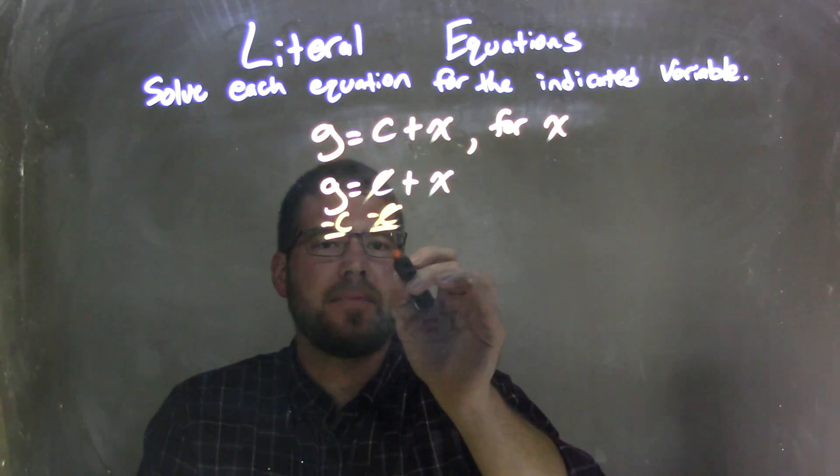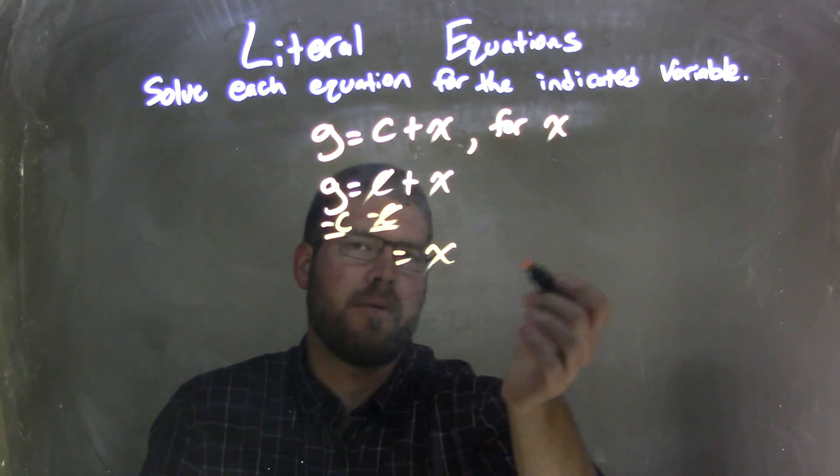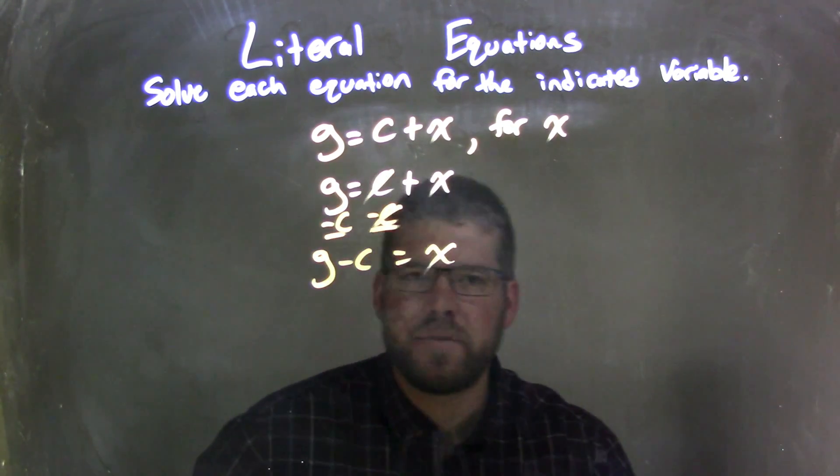That will eliminate the c here on the right, leaving me with an x by itself on the right, and then I have g minus c on the left.